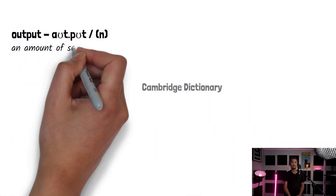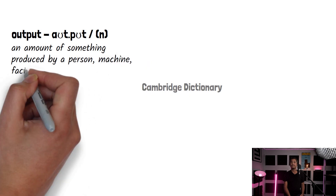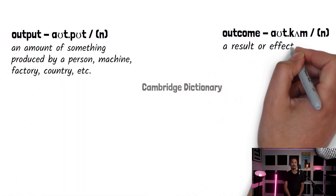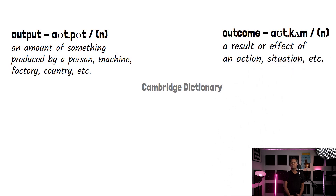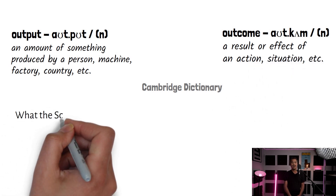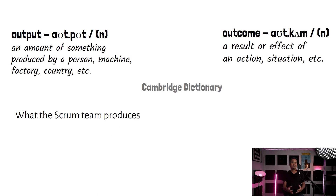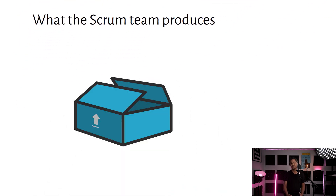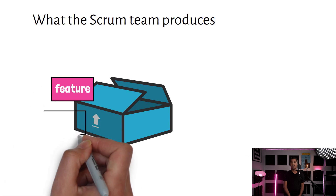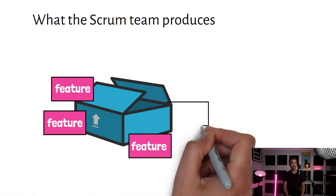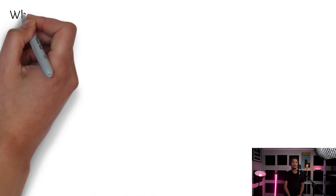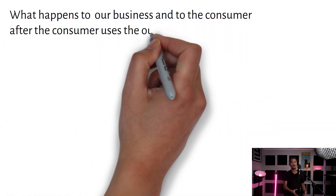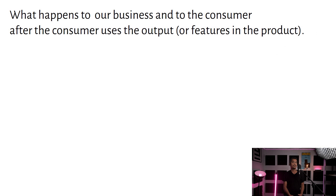According to the Cambridge Dictionary, output is an amount of something produced by a person, machine, factory, country, etc., while outcome is a result or effect of an action, situation, etc. We can say that output is what the Scrum team produces — the increment delivered every sprint by the Scrum team is an output, and the features in that increment are also considered output. Outcome is the effect that happens to our business and to our consumers after they have used the features in the product.